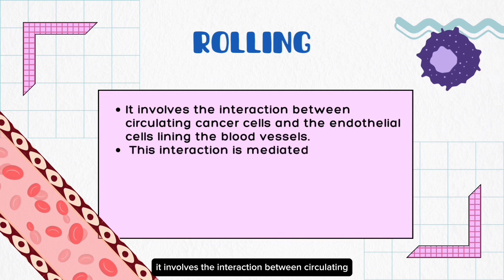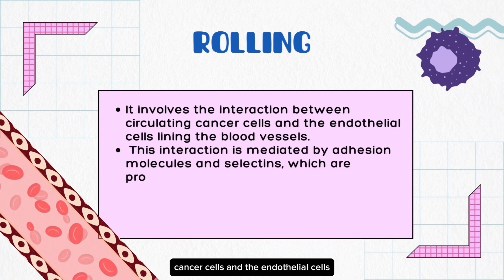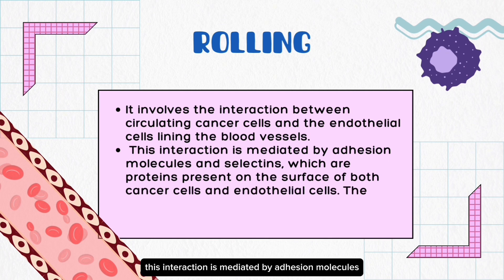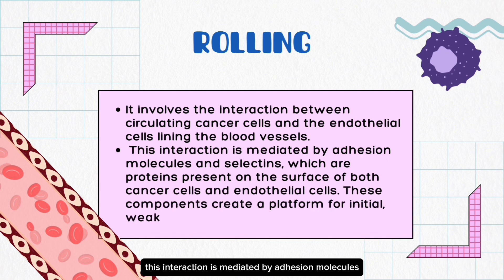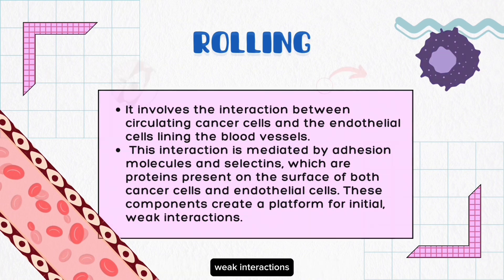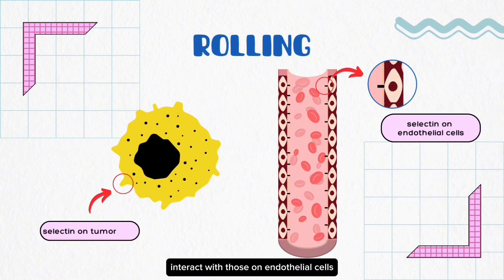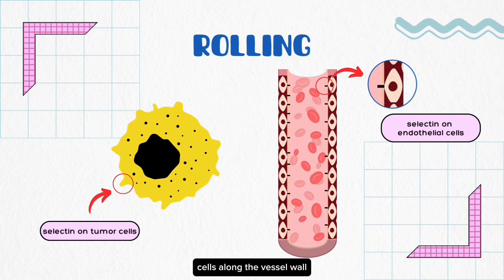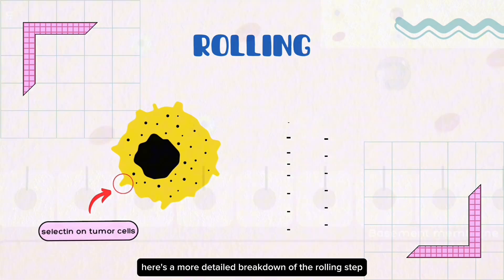Rolling involves the interaction between circulating cancer cells and the endothelial cells lining the blood vessels. This interaction is mediated by adhesion molecules and selectins, which create a platform for initial weak interactions. The selectins on tumor cells interact with those on endothelial cells, leading to a rolling motion of tumor cells along the vessel wall. This rolling is a dynamic and reversible process.